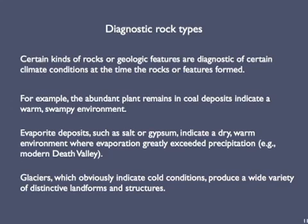Collected wisdom over the last two centuries has led geologists to conclude that certain kinds of rocks or geological features are diagnostic of certain climate conditions at the time they formed. For example, the abundant fern and other plant remains in coal deposits indicate that these materials were deposited in a warm, wet environment such as a swamp. A second example: deposits of salt and gypsum, termed evaporites, must have been deposited in a warm, dry environment where evaporation greatly exceeds precipitation. Modern environments like this include Death Valley and large parts of the Middle East.